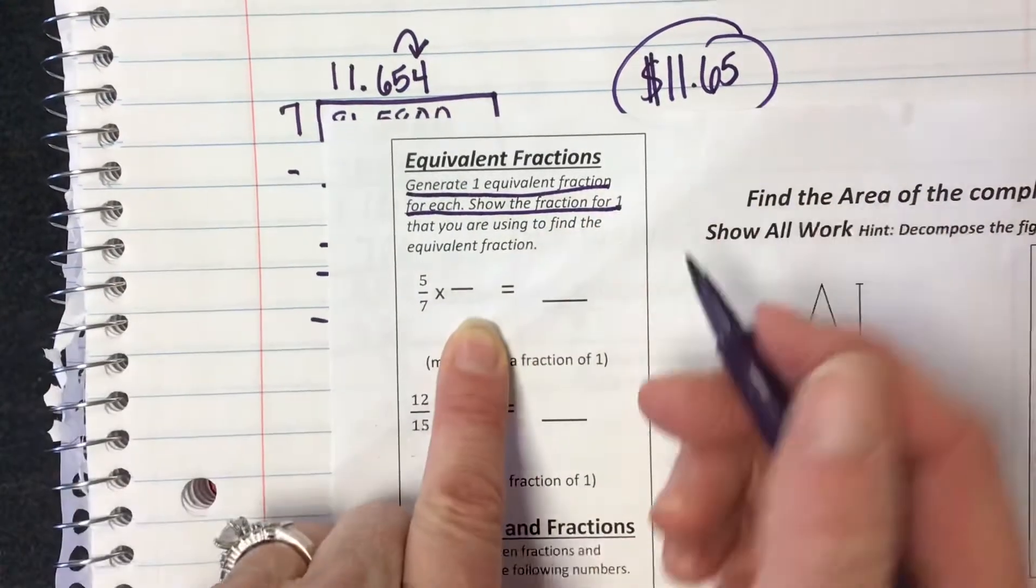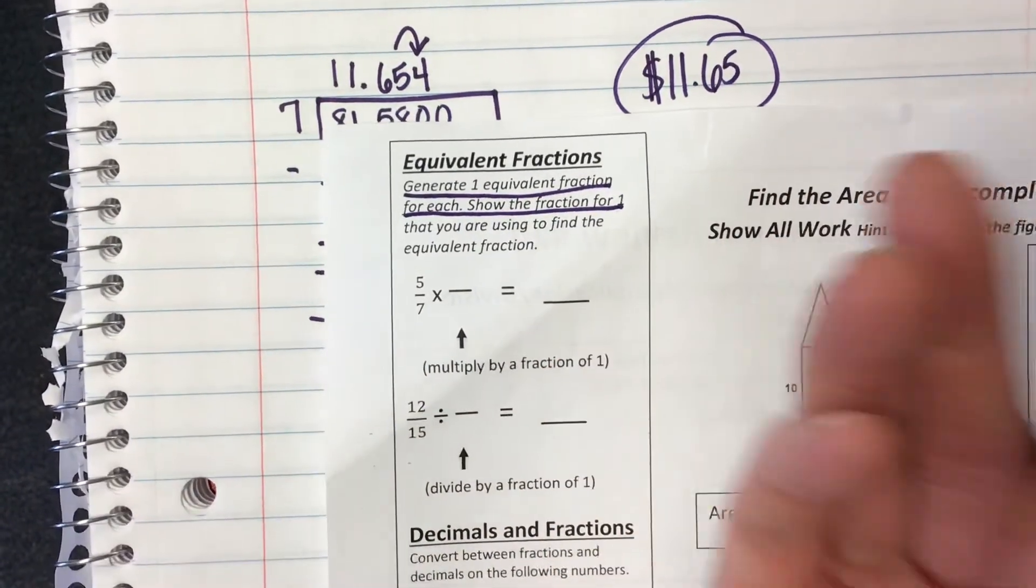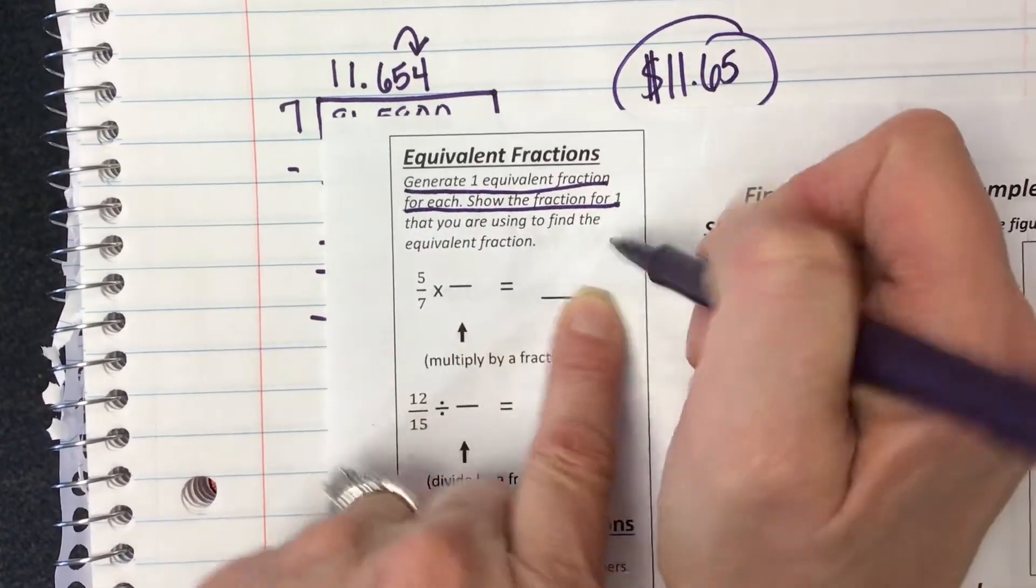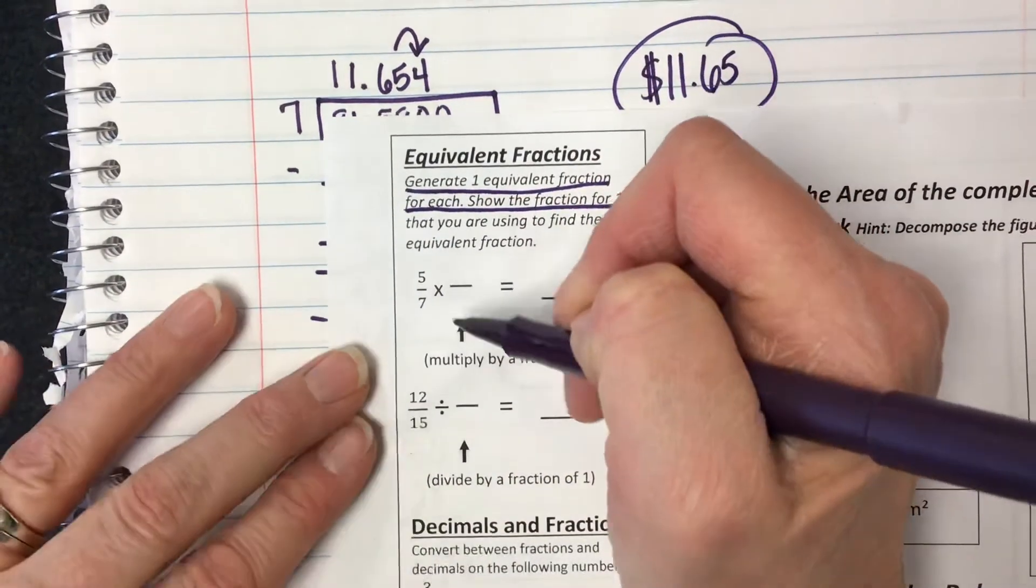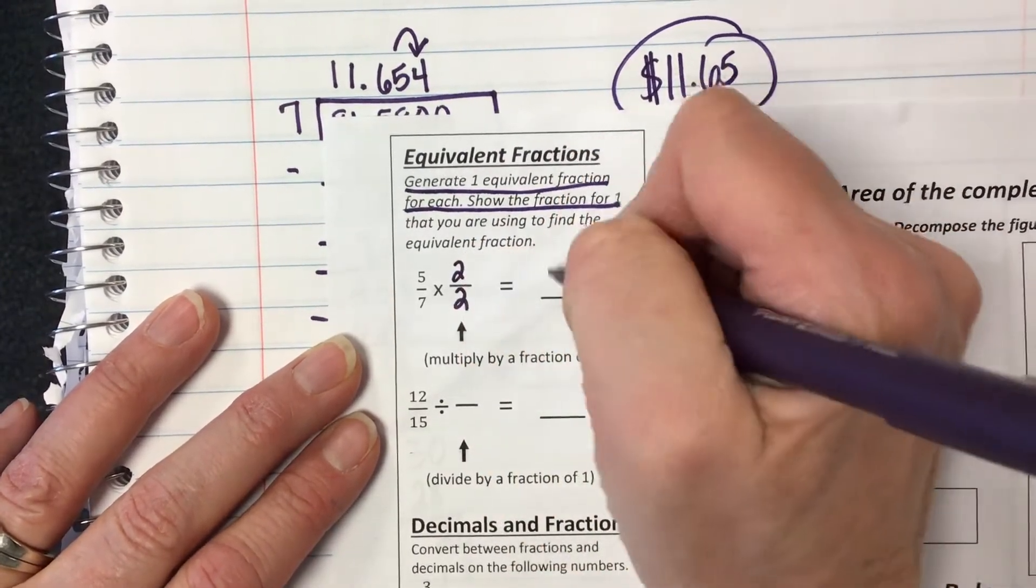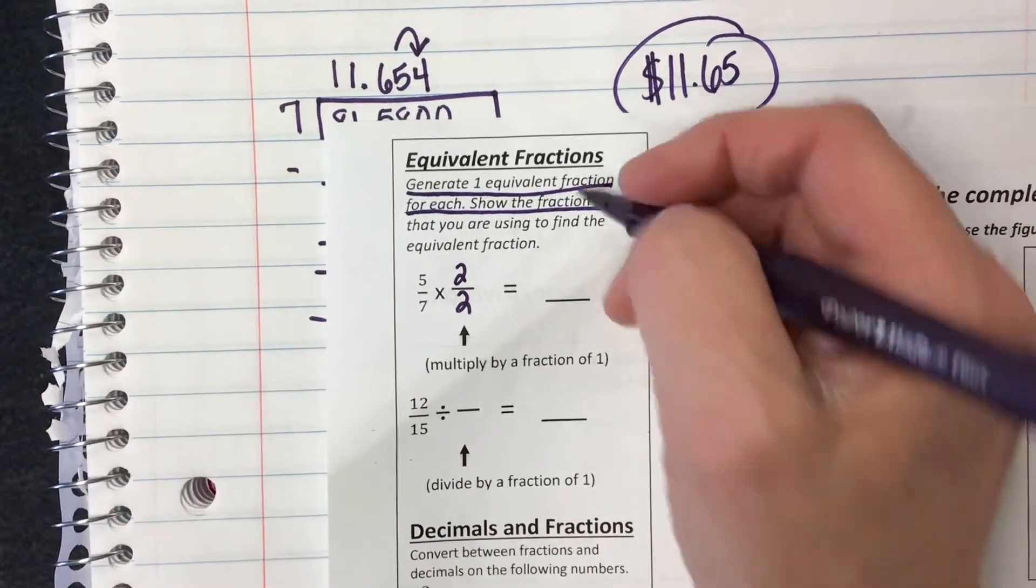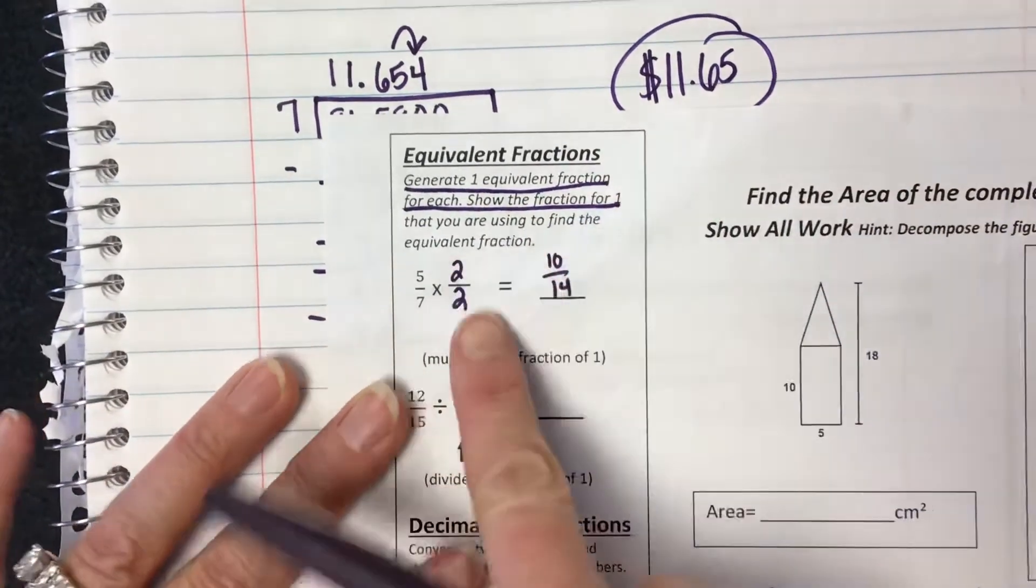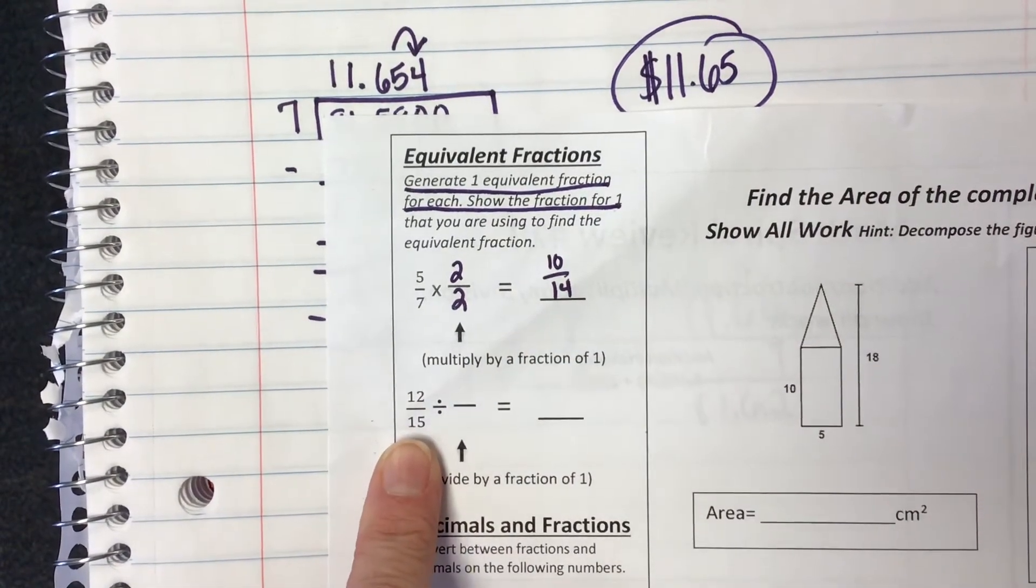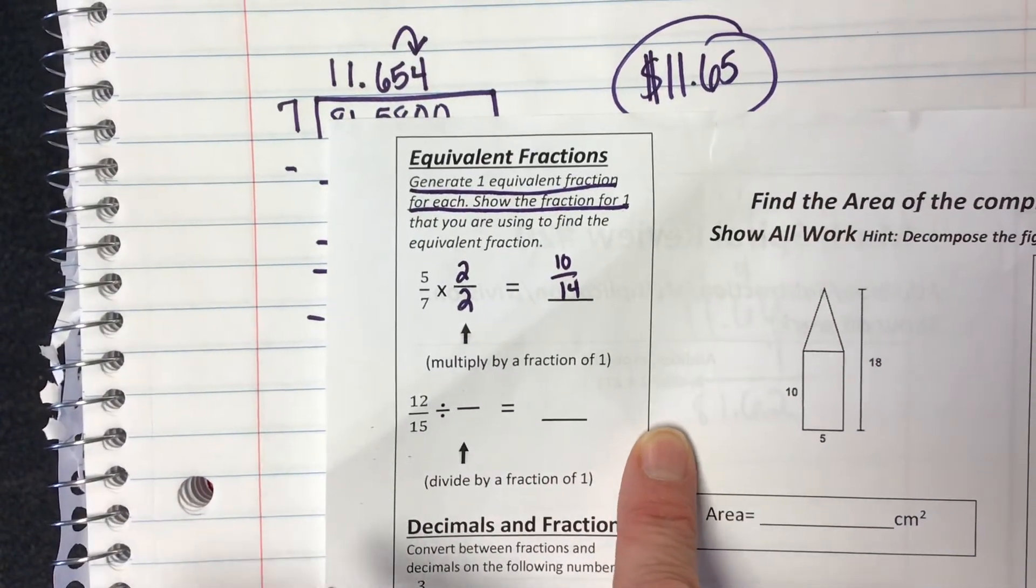So 5 sevenths. So you're just doing an equivalent fraction. So you can do 5 sevenths times 2 over 2, 3 over 3, and what's your equivalent fraction? Here is where you need to show what you are multiplying by. So if you want to multiply by 2, then what would your fraction be? What would your fraction be, Avery? 10 fourteenths. Okay, if you wanted to multiply by 3, your fraction would be 15 21st. Here you're going to divide. What is something that 12 and 15 can both be divided by to come up with an equivalent fraction? Okay.